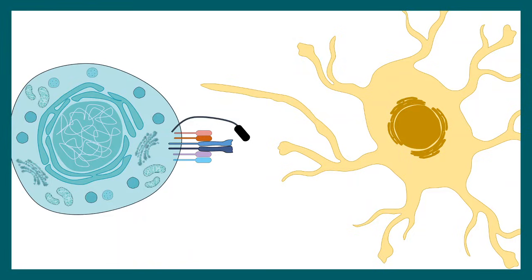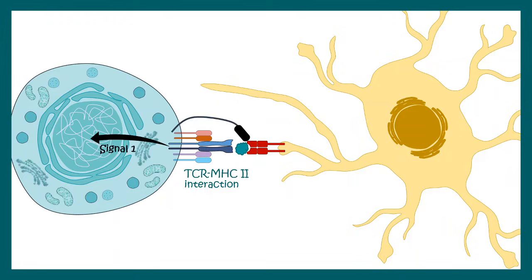Dendritic cells can present an antigen on top of a class 2 MHC molecule. This class 2 MHC molecule can be recognized by the T cell receptor. This T cell receptor-mediated signaling is really important for T cell activation — indeed, this is the first signal that is required for T cell activation.